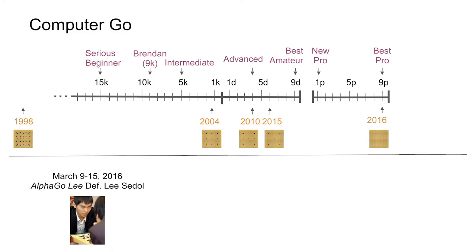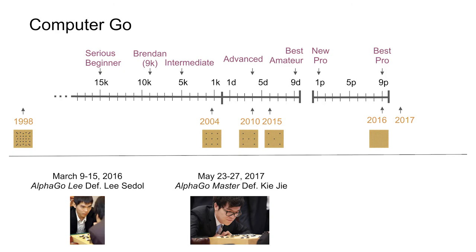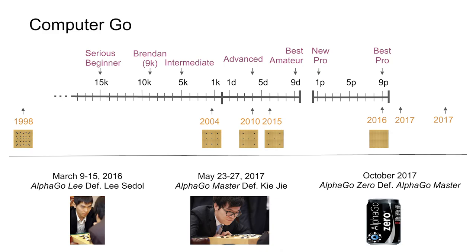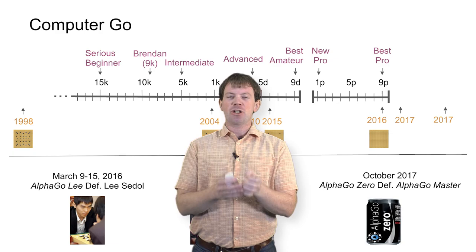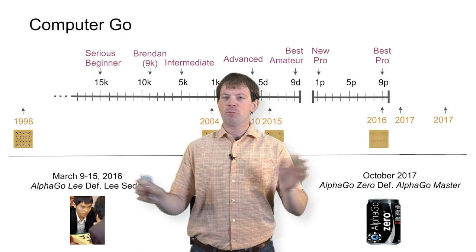A couple months later, in March of 2016, the program AlphaGo defeated Lee Sedol — one of the top professionals at the time — with a 0-stone handicap. So it took 11 years to decrease 4 stones, and then in about 3 months it went from 5 stones to beating one of the top professionals. A couple of months later, the second version, AlphaGo Master, beat the top professional Ke Jie 3-0 — the computer didn't even lose a game. And then recently, AlphaGo Zero came out and defeated the AlphaGo Master version 89-11. It took 11 years to break 4 stones, but in the last year and a half we've managed to beat the top players and then beat programs that had beaten the top players — an amazing level of progress.